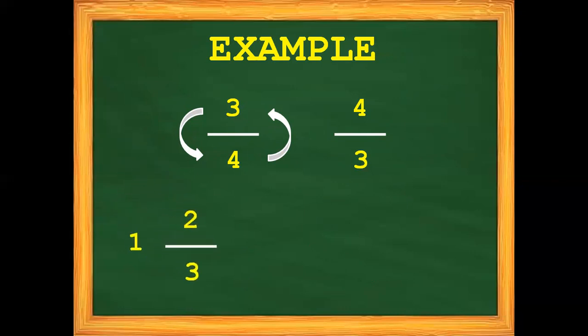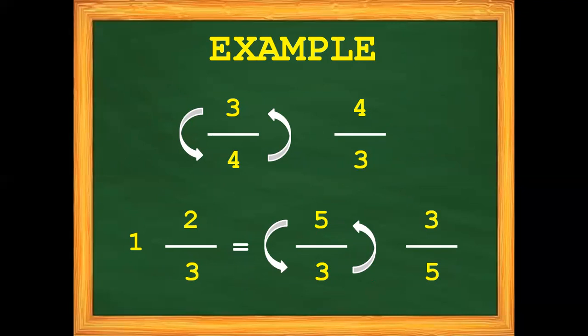Another — we have 1 and 2 thirds. In this case, before we can give the reciprocal of a mixed number, we have to change it first into an improper fraction. So first, multiply the denominator and the whole number: 3 times 1 gives us 3. Then add 2, giving us 5. So the improper fraction for 1 and 2 thirds is 5 thirds. Now, the reciprocal of 1 and 2 thirds is 3 fifths.